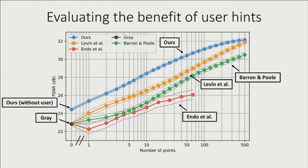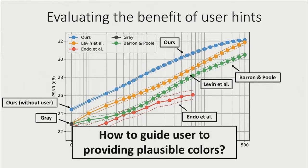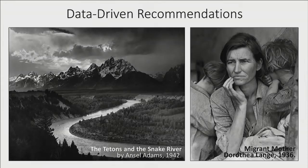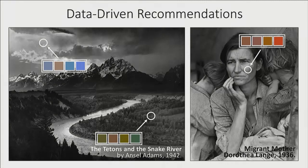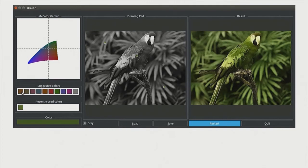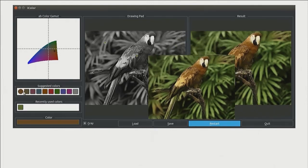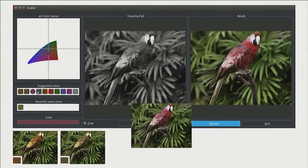So far we've shown that given correct colors, our algorithm can propagate color effectively. But in practice, it's often hard for users to pick the correct color. We propose a data-driven approach based on the predicted color distribution: we suggest common colors like different blues for sky and a variety of greens for foliage. Skin color is often very hard to pick, so we also provide a palette for skin and clothing choices. Here we show an image of a parrot — looking at a particular user point, the system provides suggested colors, and as the user clicks on each suggested color, the output colorization changes accordingly.